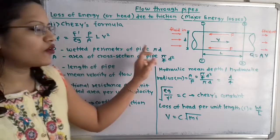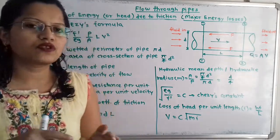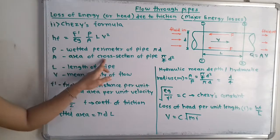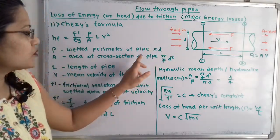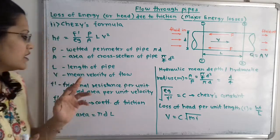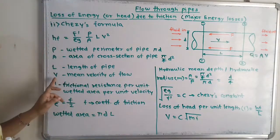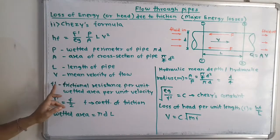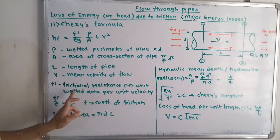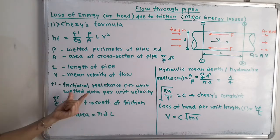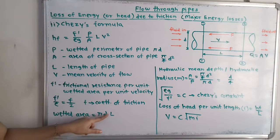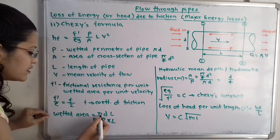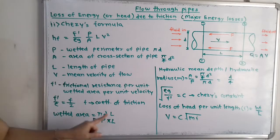The formula is: H_F = (F' / ρ) × (P / A) × L × V². Here, P is the wetted perimeter of the pipe. Since the pipe has a circular cross-section, P = π × d. A is the area of cross-section, which equals (π/4) × d². L is the length of the pipe in meters, and V is the mean velocity of flow.